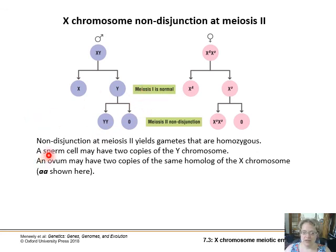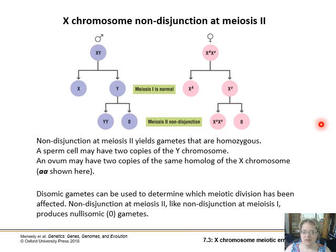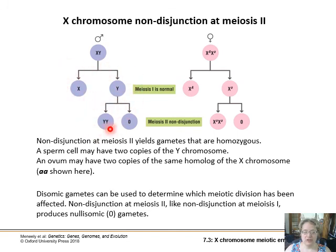Double-X gametes can also arise from meiosis II non-disjunction. These disomic gametes help identify which meiotic stage was affected: a YY result indicates meiosis I separated X and Y correctly but meiosis II then failed. This contrasts with the digametic outcomes seen from meiosis I failures.